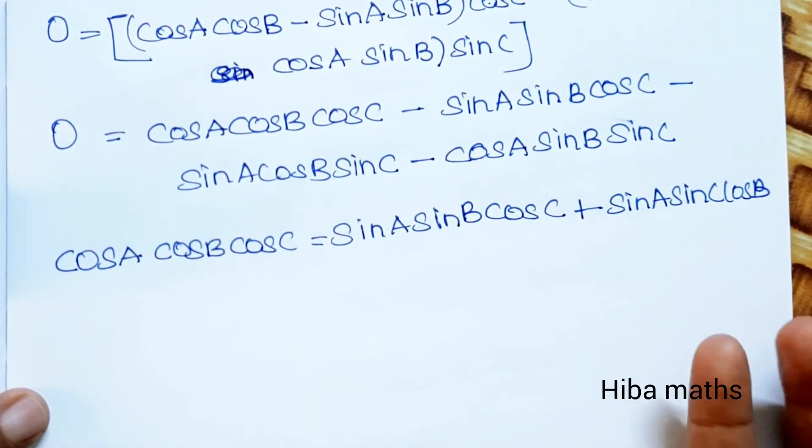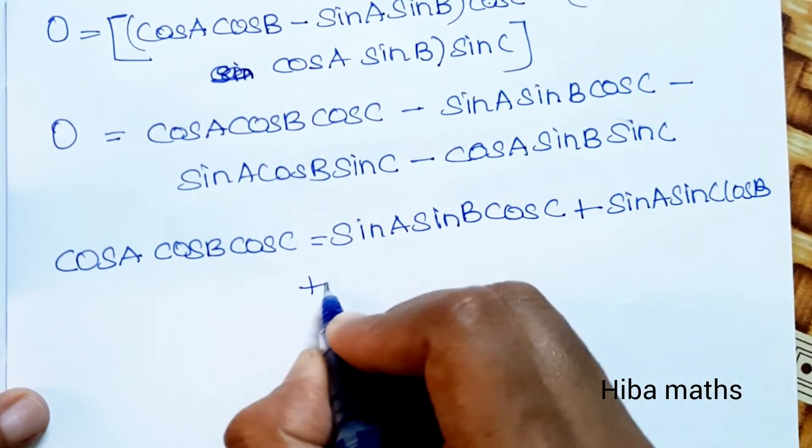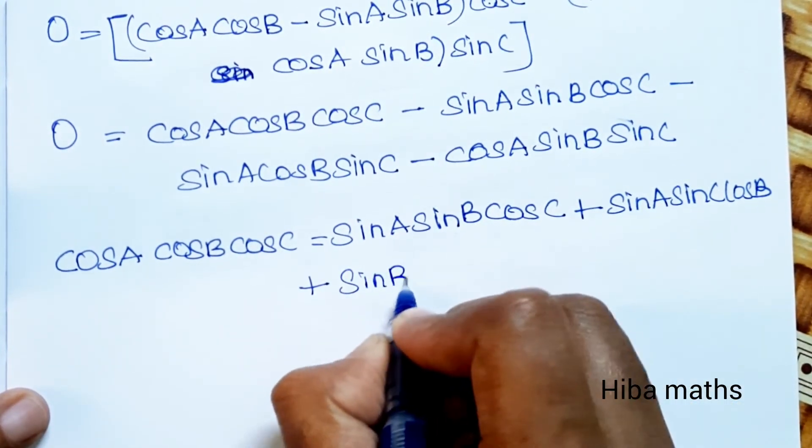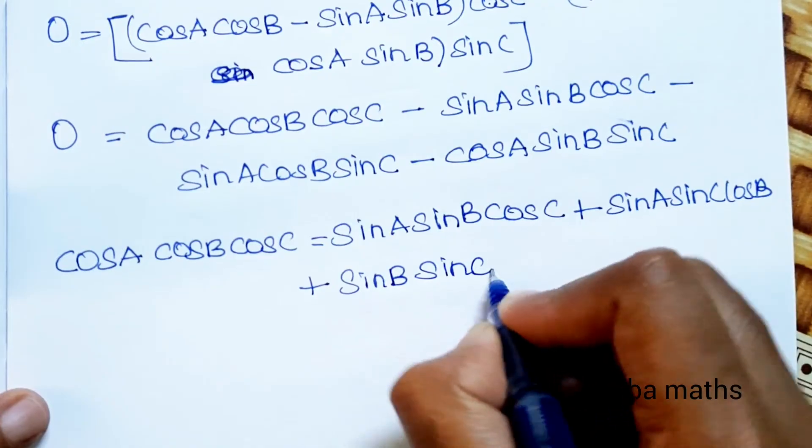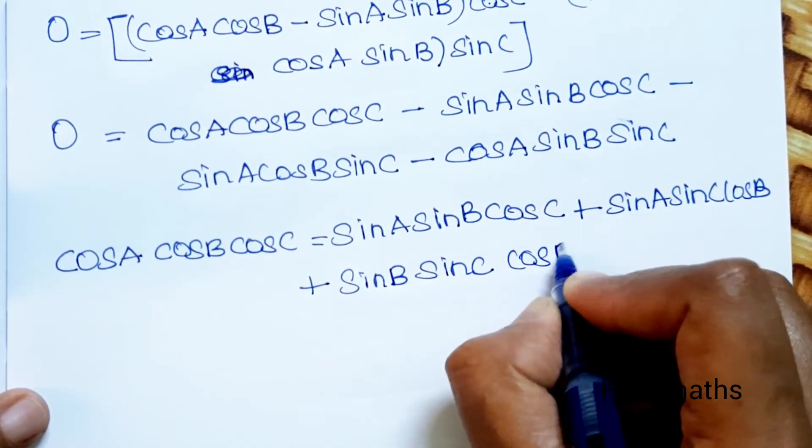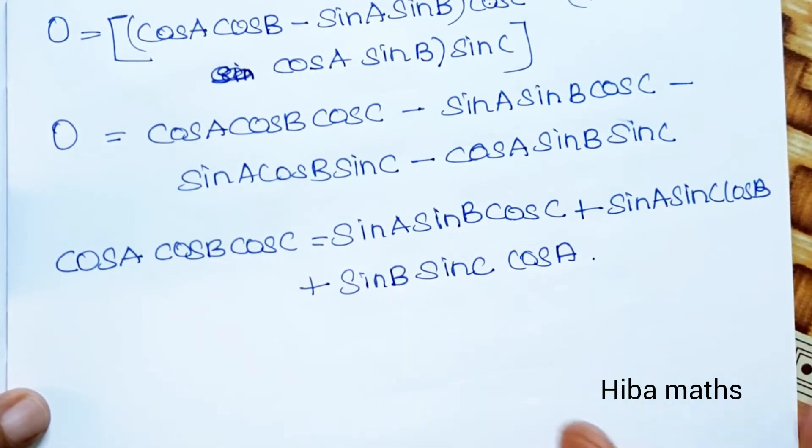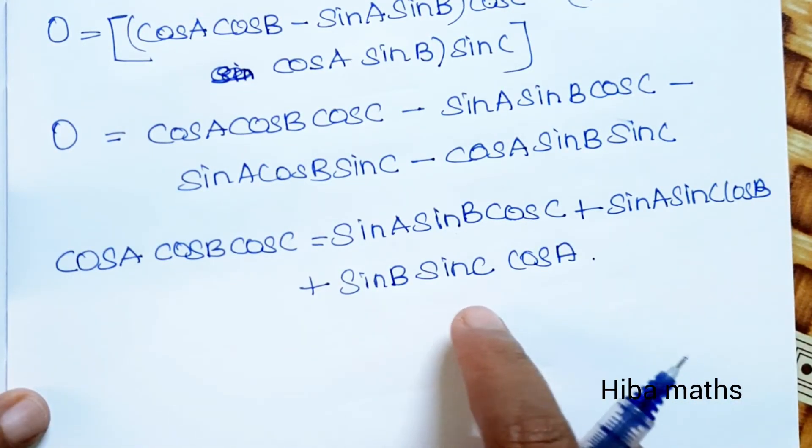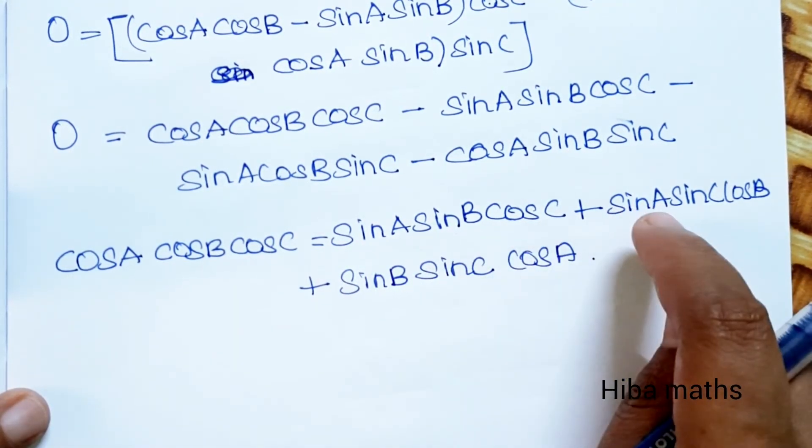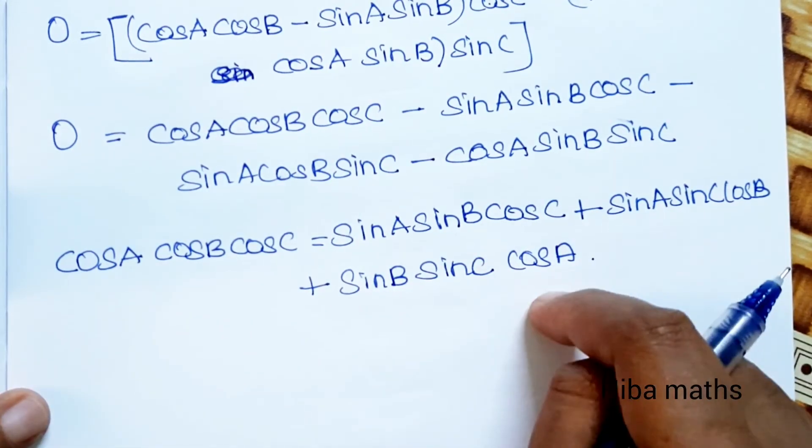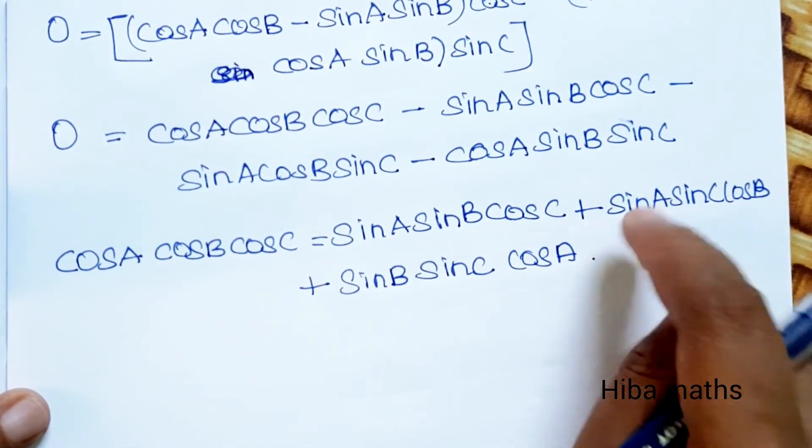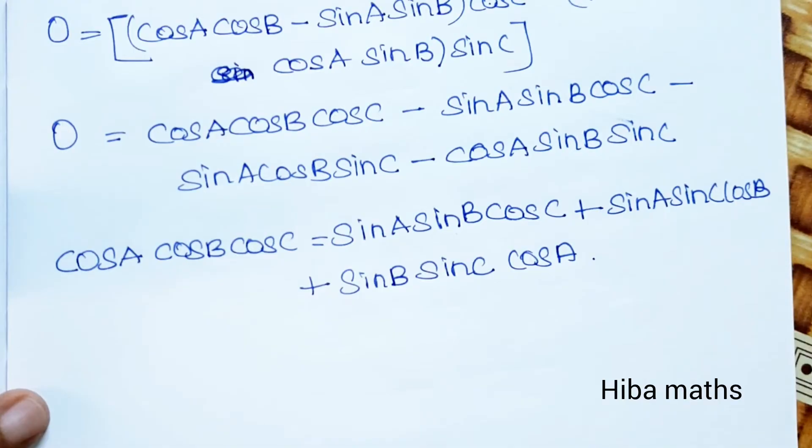Sin B sin C cos A. So this is the proof we can do. Sin A sin B cos C, sin B sin C cos A, sin C sin A cos B. Proof is complete.